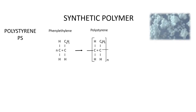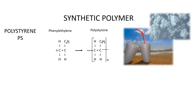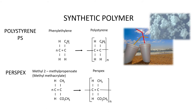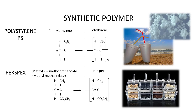Polystyrene (PS) is made from monomers called phenylethylene. It is usually used as a foam material that is water resistant and suitable for drinking cups and plates at parties. Perspex is a synthetic polymer made from monomers known as methyl methacrylate, and is used as food containers and stationery holders.